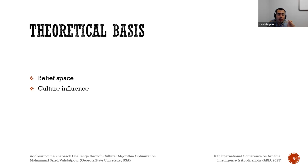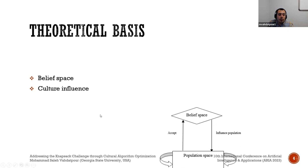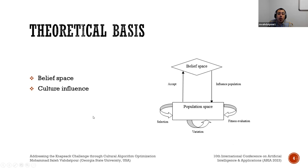By implementing cultural influence within our genetic algorithm, we aim to showcase its effectiveness in solving complex optimization problems such as the knapsack problem. Our approach synthesizes these two theoretical foundations — belief space and cultural influence — to redefine how we tackle optimization problems. This fusion of individual and collective intelligence offers a new perspective on the knapsack problem, as illustrated in the image showing the belief space and population space interaction.